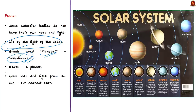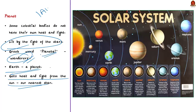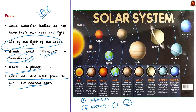The Earth gets its heat and light from the sun, our nearest star. The most recent definition of a planet was adopted by the International Astronomical Union in 2006. It says a planet must do three things: first, it must orbit a star; second, it must be big enough to have enough gravity to force it into a spherical shape; and third, it must be big enough that its gravity cleared away any other objects of similar size near its orbit around the sun.